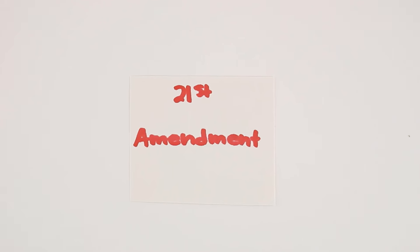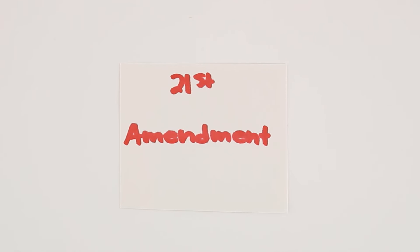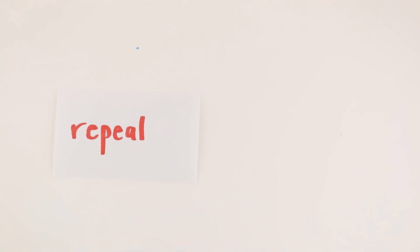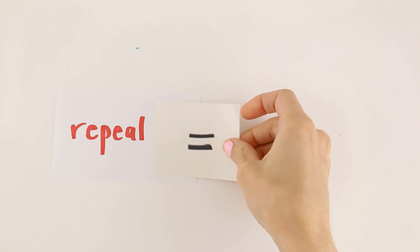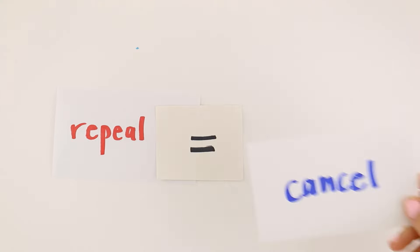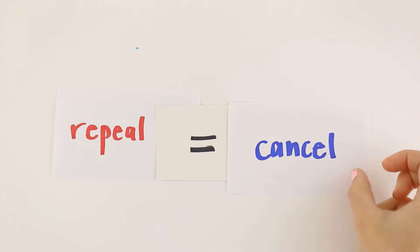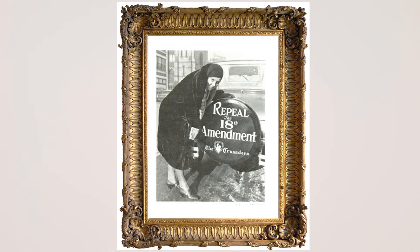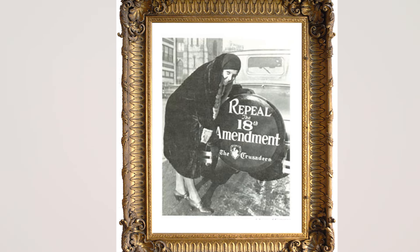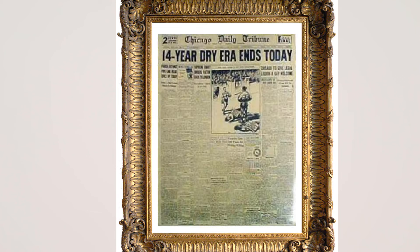The 21st Amendment is unique because it is the only amendment that repeals or cancels another amendment. The 21st Amendment repealed the 18th Amendment, which meant that alcohol was again legal in the United States.